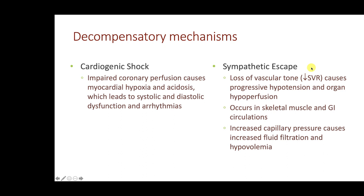Let's examine some decompensatory mechanisms. One involves cardiogenic shock, which occurs when the heart is unable to sufficiently contract and regulate its output. In severe shock, we have impaired coronary perfusion due to low arterial pressure, resulting in myocardial hypoxia and acidosis. The heart muscle responds by contracting less well under these acidotic and hypoxic conditions, leading to systolic and diastolic dysfunction within the heart chambers and arrhythmias — and that can be a mechanism contributing to decompensation.